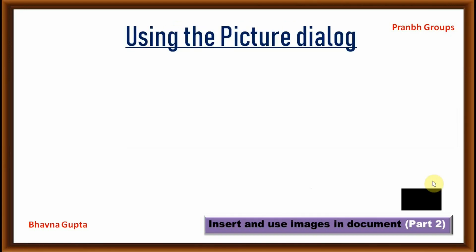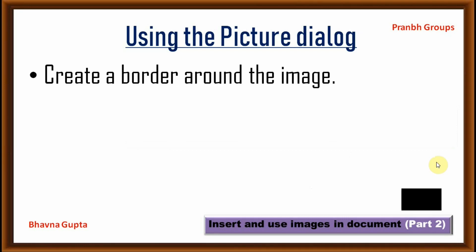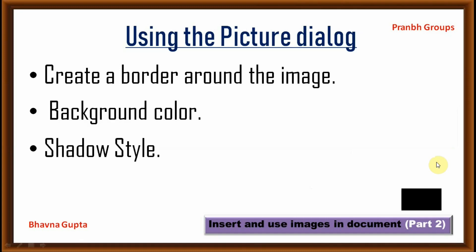Let's move to the second method — using the picture dialog box. Using this method, you can create a border around the picture, set a background color, and apply a shadow style.